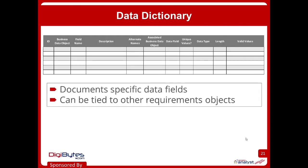Next, we're going to talk about the data dictionary. This demonstrates our specific field-level data. It really gets into all the nitty-gritty attributes of a particular business data object. You're going to talk about field names and different ways that you can name these attributes. That may or may not be the same names the database team uses. We're talking about how your customer thinks about the data. Data dictionaries are really helpful when you use them with other models like that business data diagram. For every one of those objects, I need to come and do this attribute-level definition.